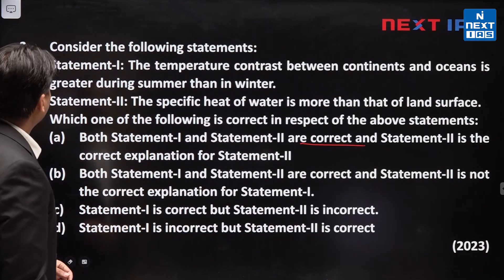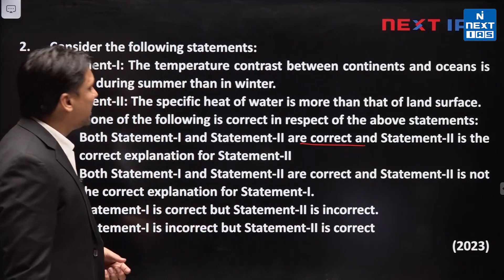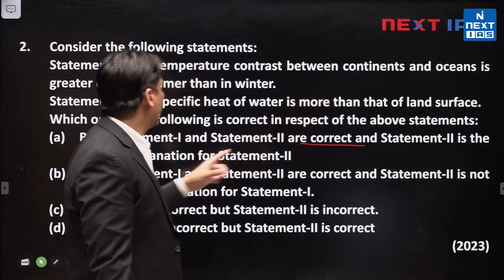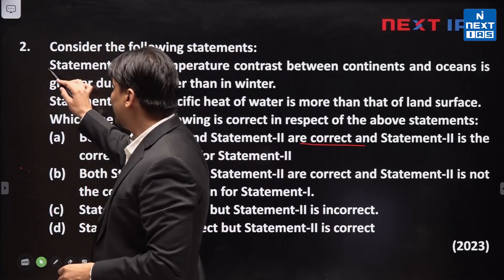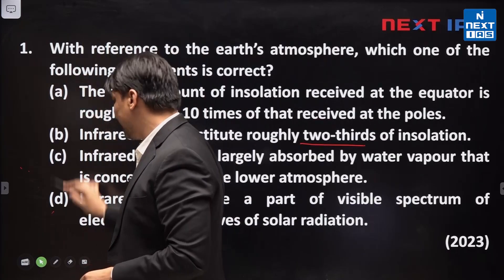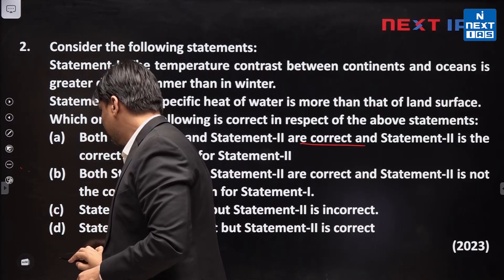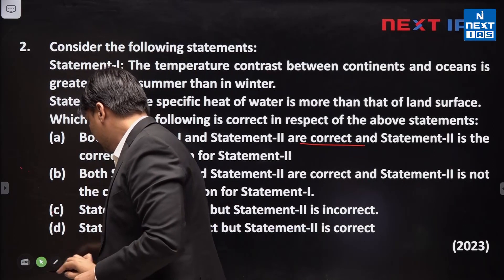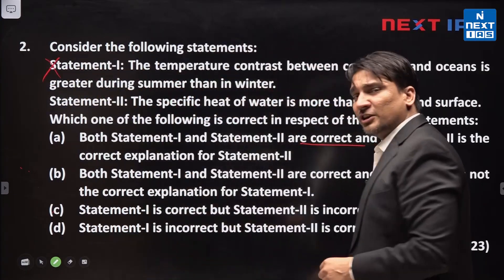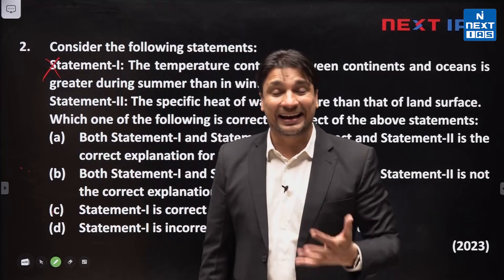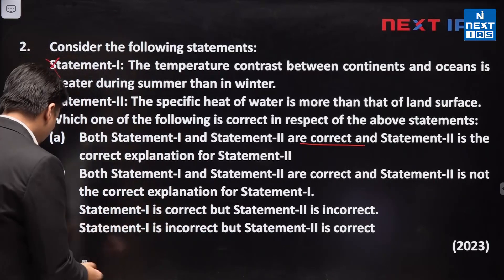The second question: consider the following statements. Statement one — the temperature contrast between continents and oceans is greater during summer than winter. This statement is incorrect because the temperature contrast between continents and oceans is actually higher during the winter season.